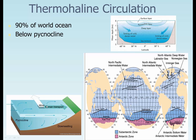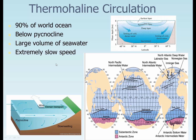We get downwelling when this water moves down below the pycnocline, but this is a convergence area — just like in plate tectonics where plates collide, this is where water masses collide with either land or other water masses. It's a large volume of seawater — again, it's 90% — and it's extremely slow flowing.